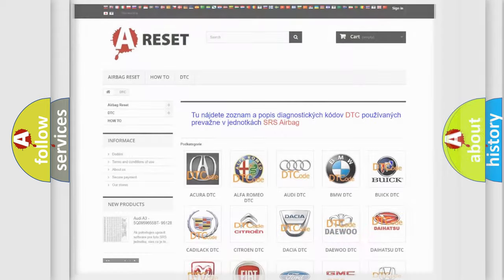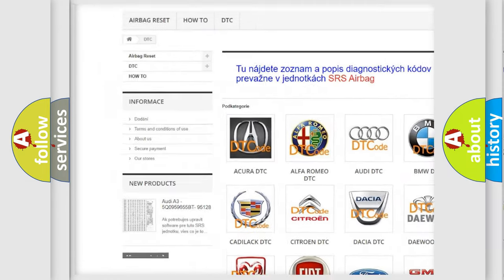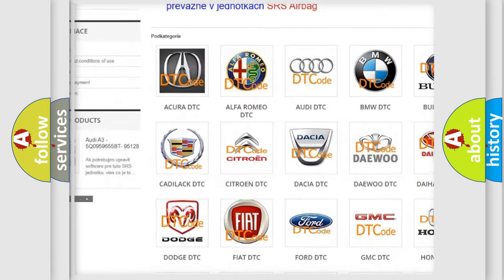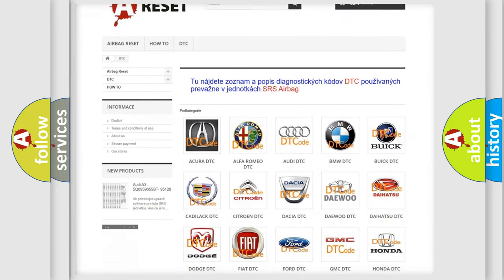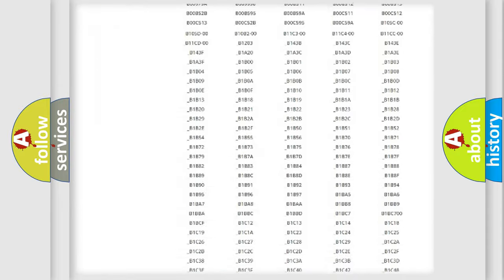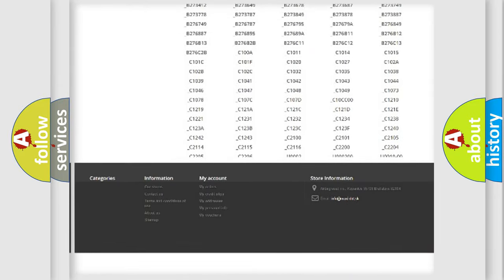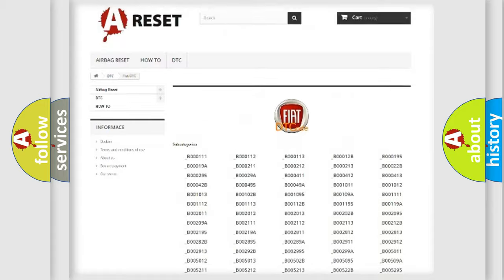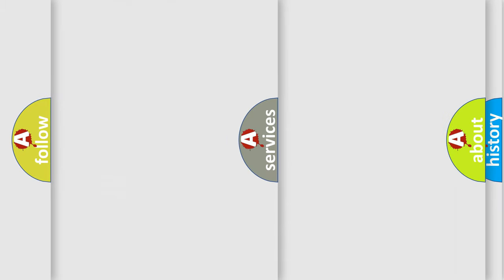Our website airbagreset.sk produces useful videos for you. You do not have to go through the OBD2 protocol anymore to know how to troubleshoot any car breakdown. You will find all the diagnostic codes that can be diagnosed in Fiat vehicles, and many other useful things.